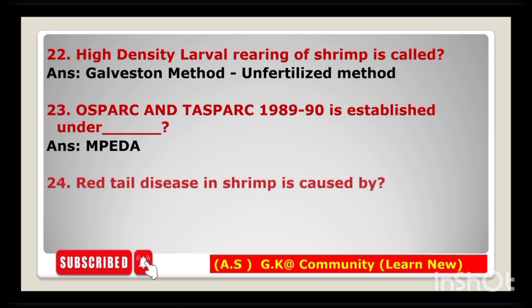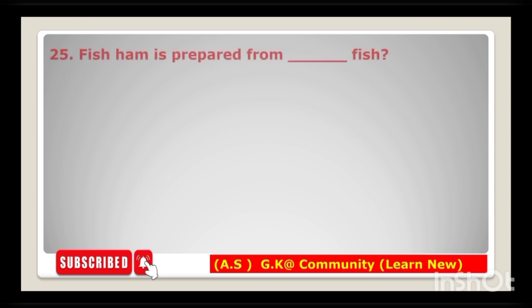Next question: red tail disease in shrimp is caused by which virus? The answer is Taura Syndrome Virus. Next question: fish ham is prepared from which fish? The answer is tuna — fish ham is prepared from tuna fish.